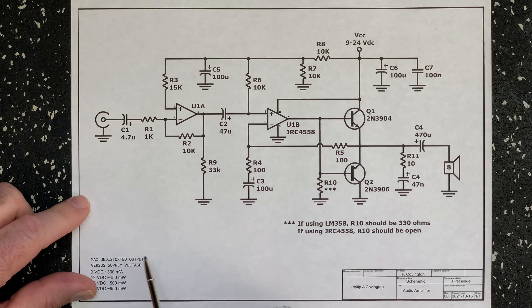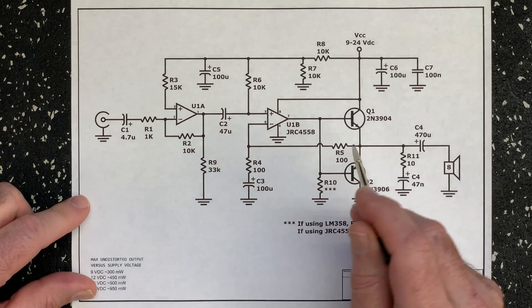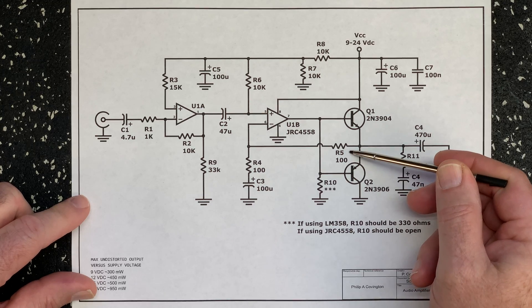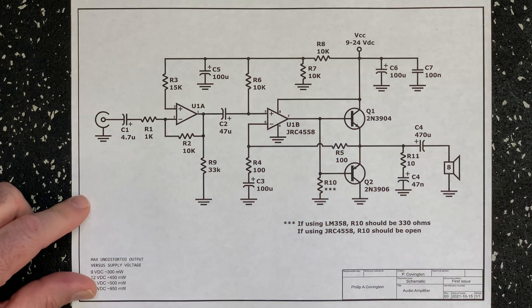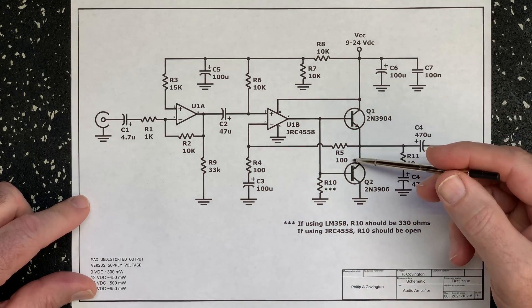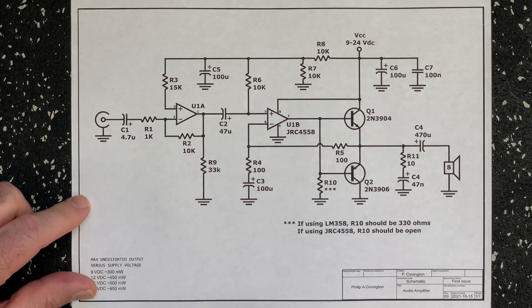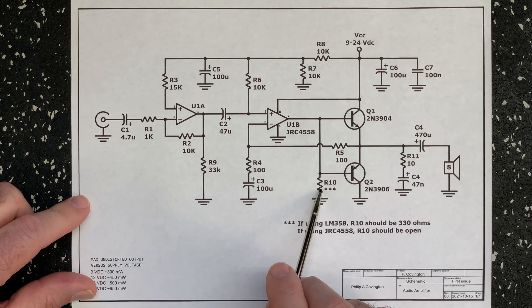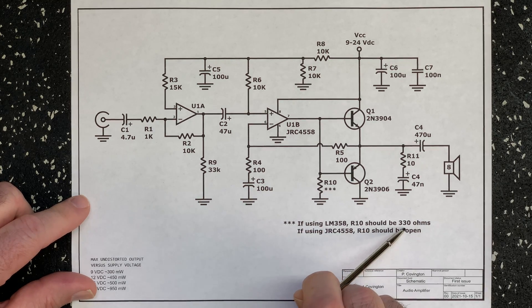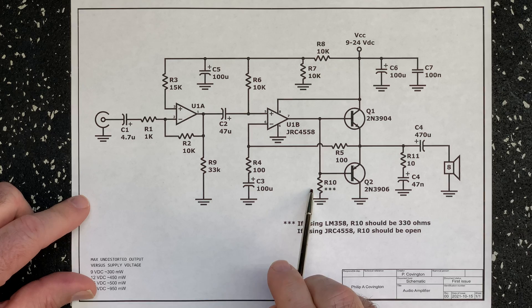You can change R1 and or R2 to achieve different gains. In testing, I found that using 100 ohms for both R4 and R5 gave the best slew rate performance from the 4558 op amp and also minimum crossover distortion. If you're using op amps such as the LM358, then a 330 ohm resistor at R10 gives the least crossover distortion performance.